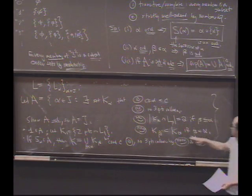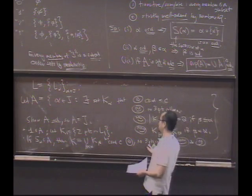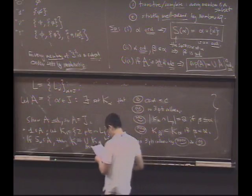It has no three points collinear because it's a nested sequence here, each of which has no three points collinear. So you pick three points. It's eventually in one of the things you union, so it should be not collinear.